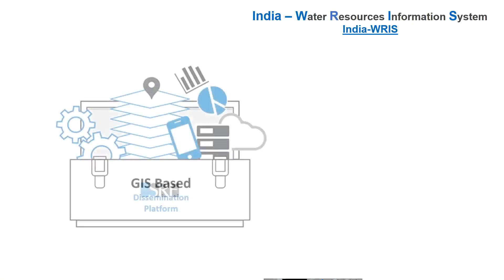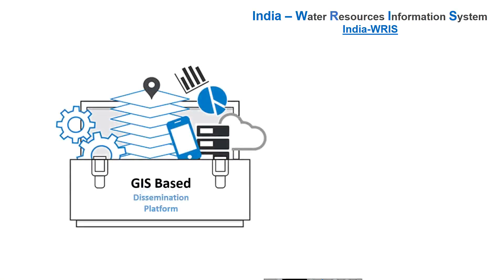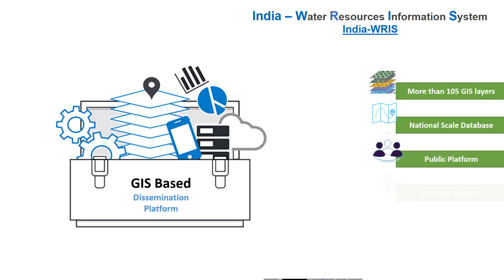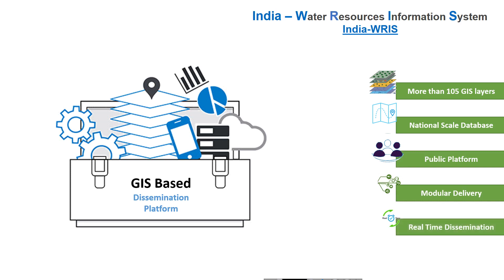IndiaVirus is a GIS-based data dissemination platform holding more than 105 GIS layers on a national scale, available on a public platform. It offers modular delivery with real-time data dissemination capabilities.